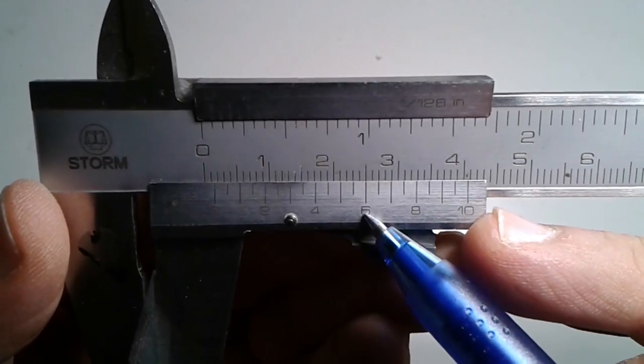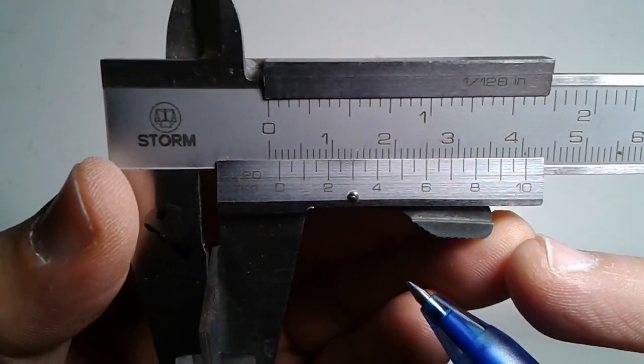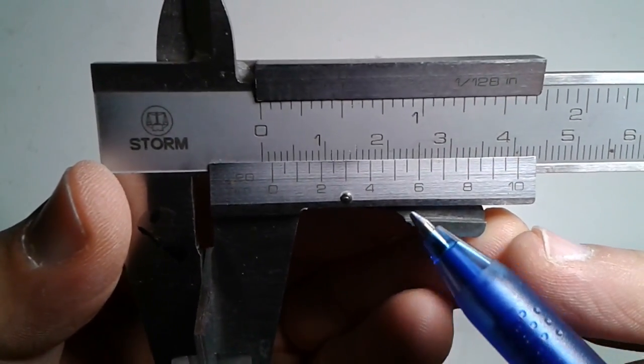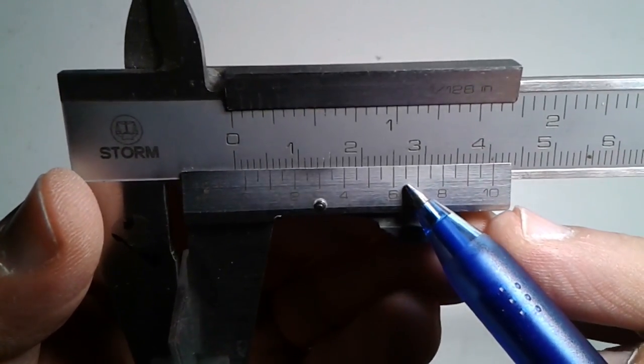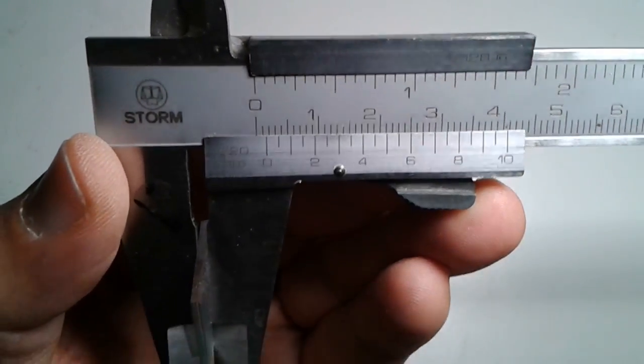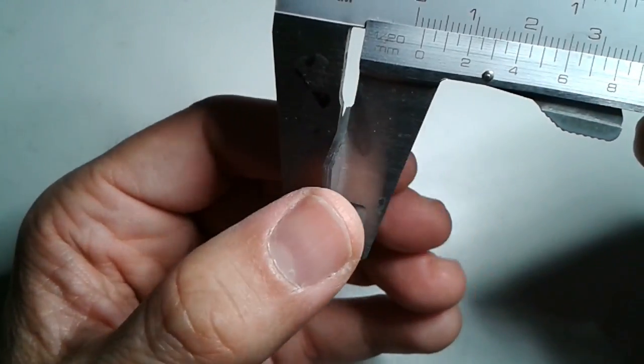Actually some people actually do this because for very high resolution microscopy you actually need to have a very precise measurement of the cover glass thickness. So there are those calipers around that people actually use to measure out the thickness of a cover glass. For amateur purposes I think it's not necessary, but yeah it's a little bit just showing you a proof of concept here.